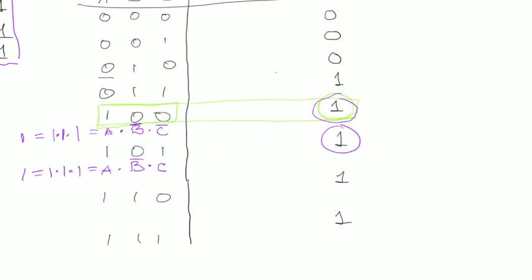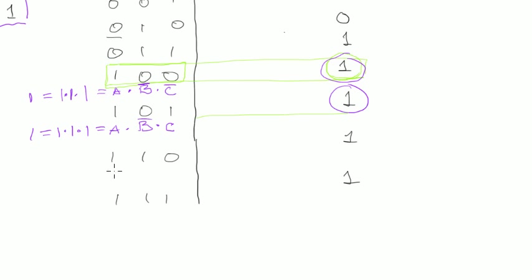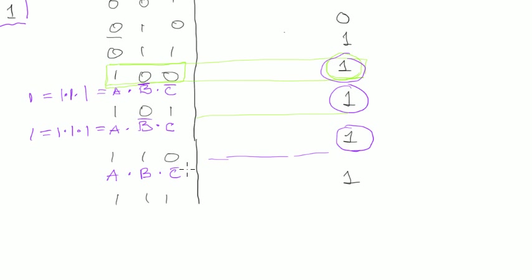Let's do the same for the next row. It should be a multiplied by b multiplied by c-negated. We negate c because we really want the result to be 1 — if we don't negate c, the last factor would be 0 and it would ruin the whole product. We want ones here because we want one in the result.